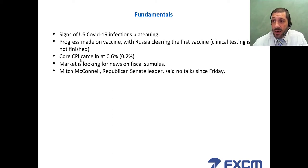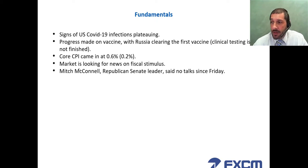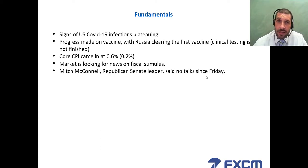Core CPI on a month-on-month basis came in at 0.6% against a forecast of 0.2%, so there is certainly some inflation coming through from the demand side. The market is looking for news on fiscal stimulus; however, Mitch McConnell, the Republican Senate leader, said that no talks have been made since Friday, and that disappointed the market.